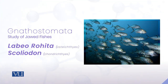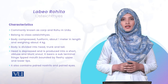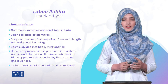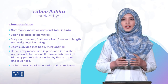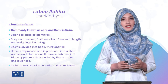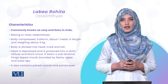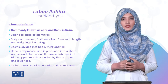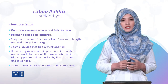اب ان fishes کی بات کرتے ہیں جن میں jaws اور paired appendages exist کرتی ہیں - انہیں Gnathostomata کہتے ہیں۔ Gnathostomata کی دو classes ہیں: Chondrichthyes اور Osteichthyes۔ Labeo rohita جو class Osteichthyes سے belong کرتی ہے، اس کے بارے میں detail میں پڑھیں گے۔ Labeo rohita کا common name Rohu یا Carp ہے، اور اس class کی fishes میں bony skeleton ہوتی ہے۔